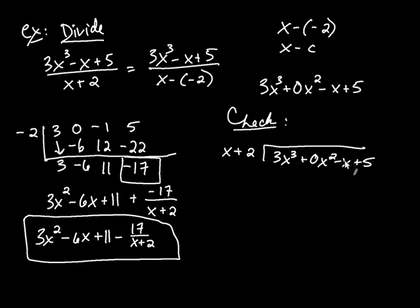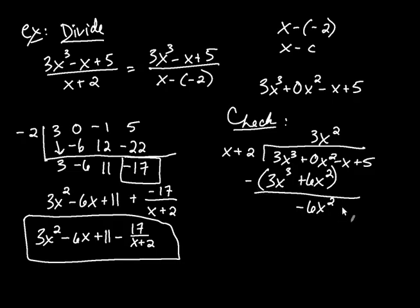Now, we did long division in a previous video, but the way that works is, what do you have to multiply the x by to get 3x cubed? That's going to be 3x squared. And then you take that and you distribute. So it's going to be 3x cubed plus 6x squared. And then you put parentheses around that and subtract the whole thing. And you're left with, well, these cancel, but you get a negative 6x squared minus x plus 5 when I brought down the negative x and the positive 5.